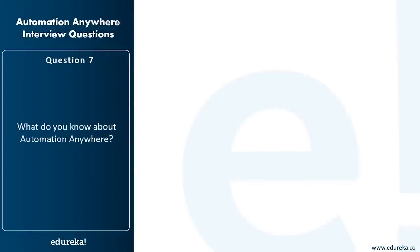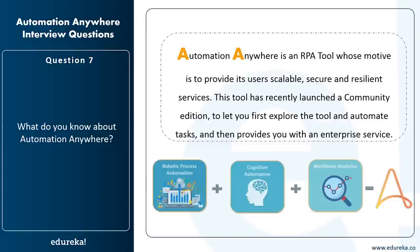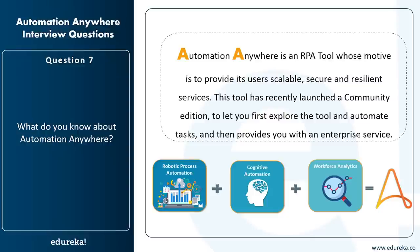What do you know about Automation Anywhere? Automation Anywhere is an RPA tool whose goal is to provide scalable, secure, and resilient services. It recently launched a community edition and also provides an enterprise version for automating tasks at an enterprise level. It offers better performance through the ability to integrate with different platforms and scale simultaneously. You can summarize Automation Anywhere as: Robotic Process Automation + Cognitive Automation + Workforce Analytics = Automation Anywhere.